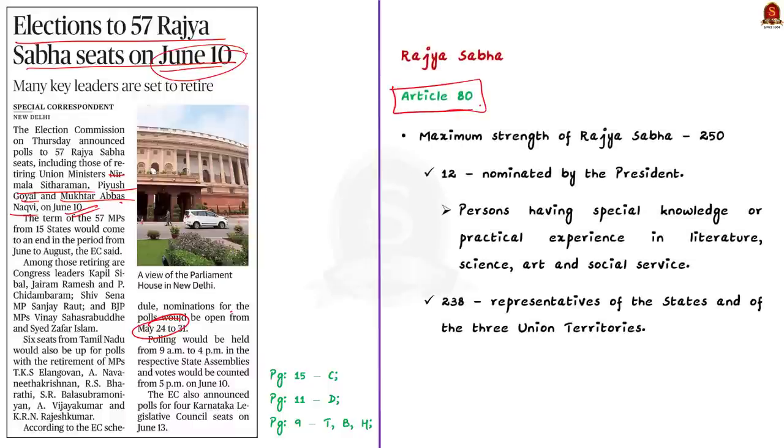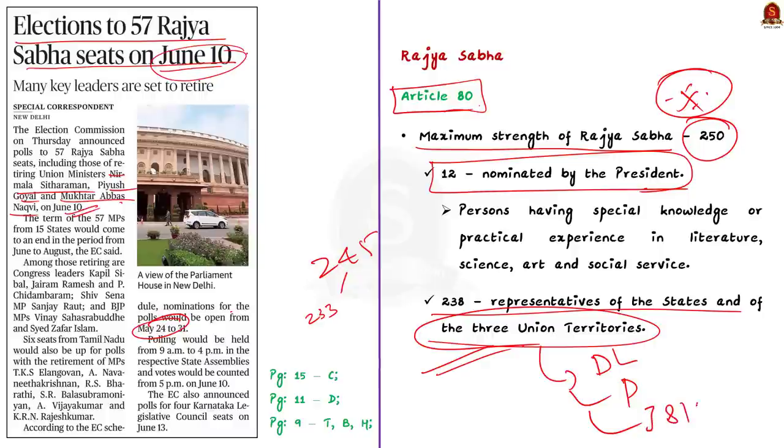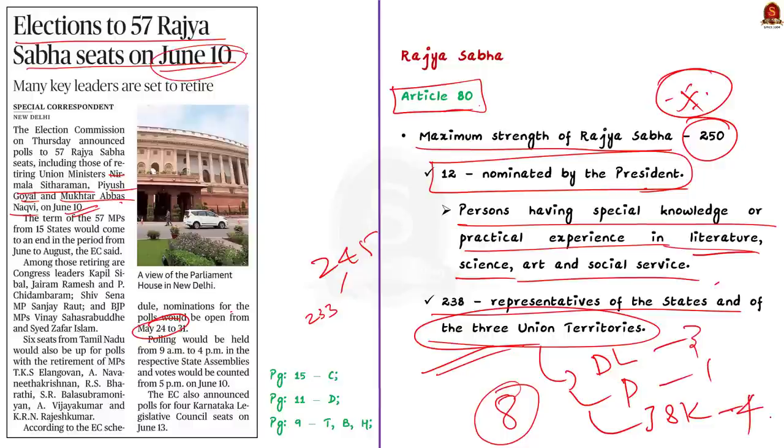First of all, let us see about the strength of Rajya Sabha. Article 80 of the Constitution lays down the maximum strength of Rajya Sabha which is 250. Out of 250, 12 members are nominated by the President and 238 are representatives of states and of three union territories. Note that the present strength of Rajya Sabha, however, is 245 out of which 233 are representatives of the states and union territories of Delhi, Puducherry and Jammu and Kashmir, and 12 are nominated by the President. The members nominated by the President are persons having special knowledge or practical experience in respect of such matters as literature, science, arts and social service. Note that there are eight members elected from the union territories. That is three from Delhi, one from Puducherry and four from Jammu and Kashmir. Please note this fact. Only three union territories have representation in Rajya Sabha and other union territories are not represented in Rajya Sabha.